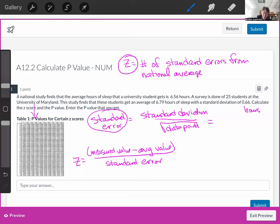The standard error is the standard deviation, 0.66 hours, over the number of data points. The number of data points is 25, so it's the square root of 25. 0.66 divided by the square root of 25, which is 5, gives us a standard error equal to 0.132 hours.